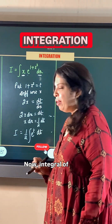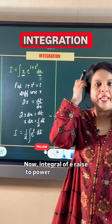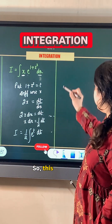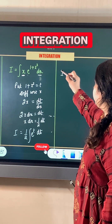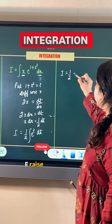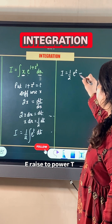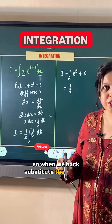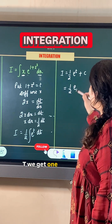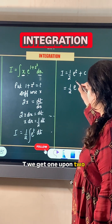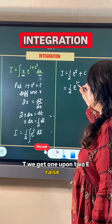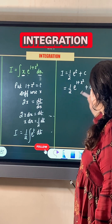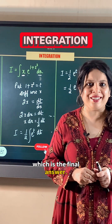The integral of e raised to power t is e raised to power t only. So this becomes 1 upon 2 times e raised to power t plus c. When we back substitute the value of t, we get 1 upon 2 e raised to power 1 plus x squared plus c, which is the final answer.